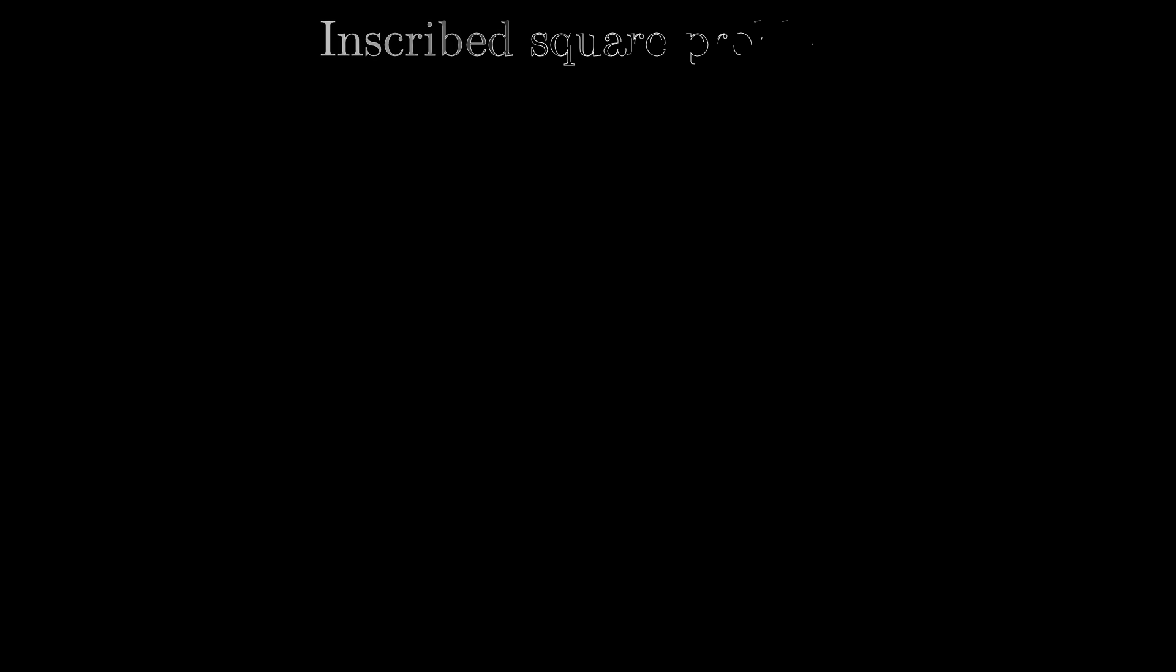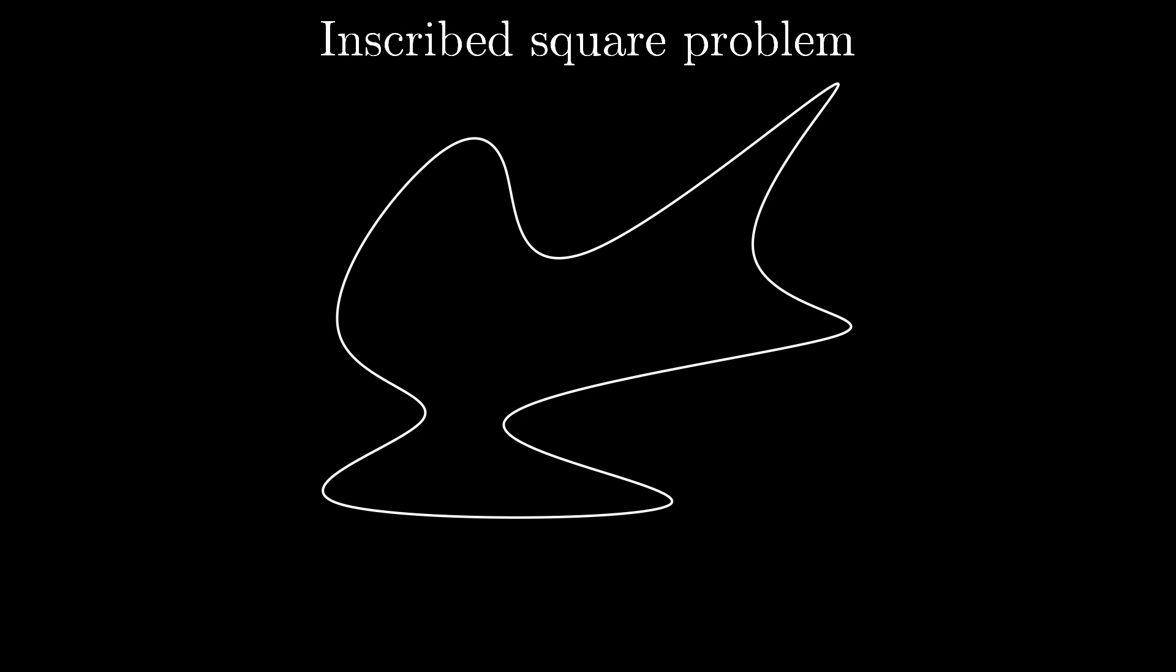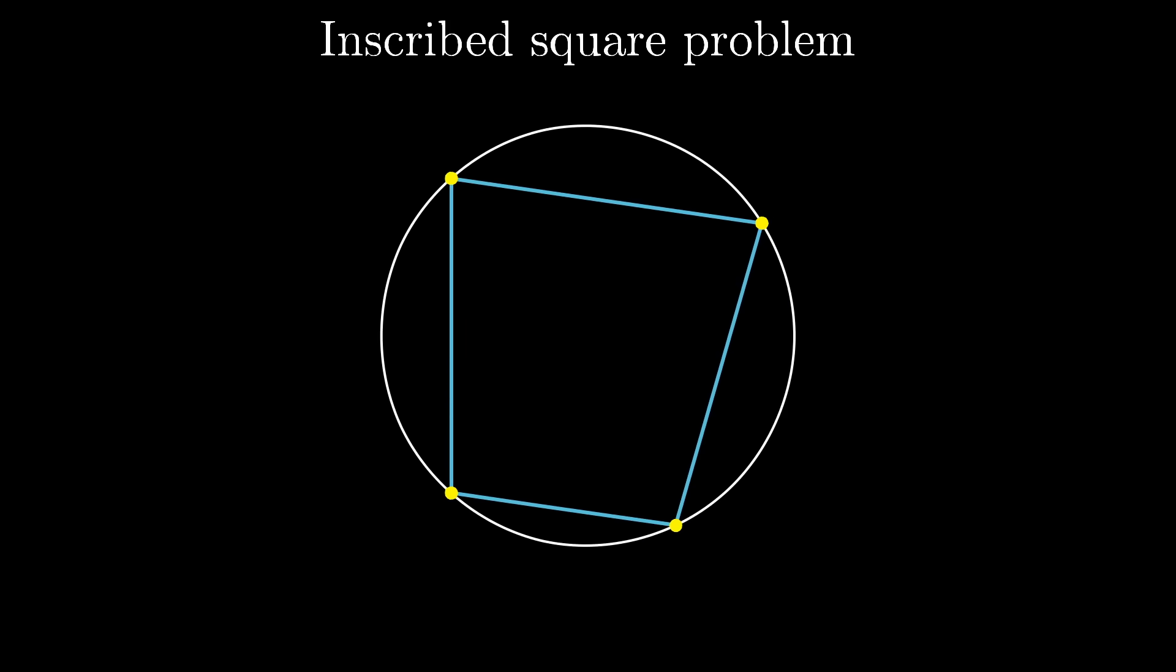So there's this unsolved problem called the inscribed square problem. If you have a closed loop, meaning you squiggle some line through space in a potentially crazy way and you end up back where you started, the question is whether or not you'll always be able to find four points on this loop that make up a square. If your closed loop was a circle, for example, it's quite easy to find an inscribed square. Infinitely many, in fact.